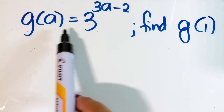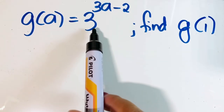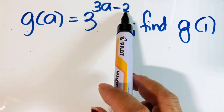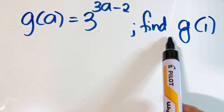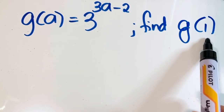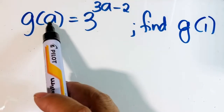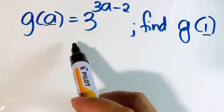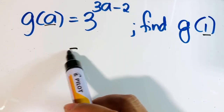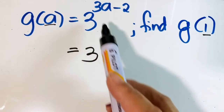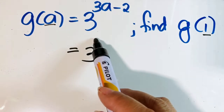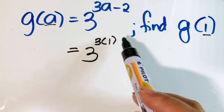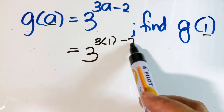Next, g of a equals 3 raised to the power of 3a minus 2. Find g of 1. The value of a is 1, so let us plug in. The base is 3, and the exponent is 3 times a, which is 1, minus 2.